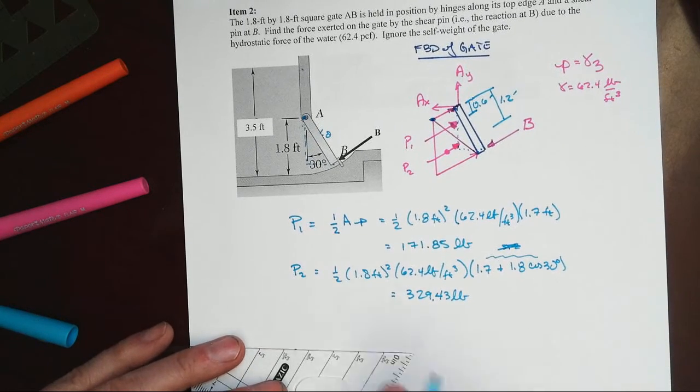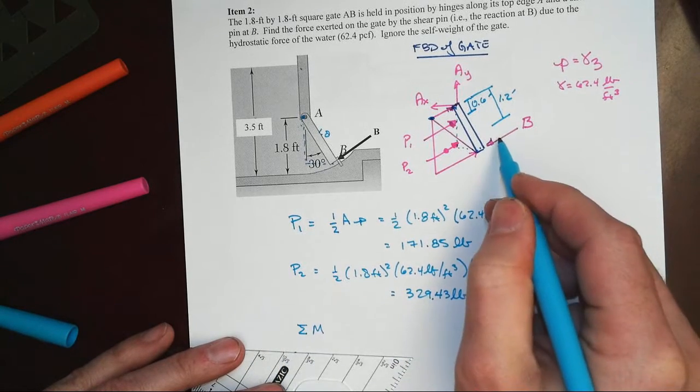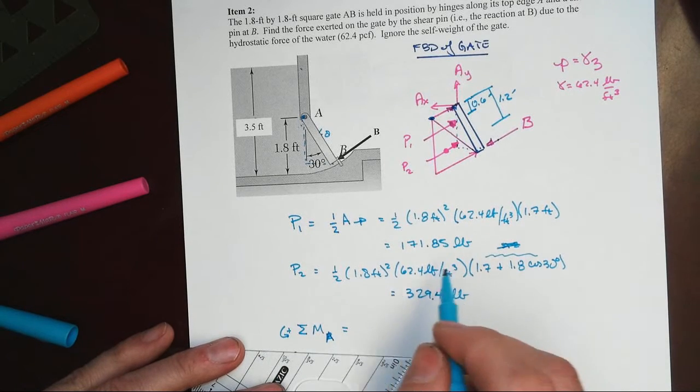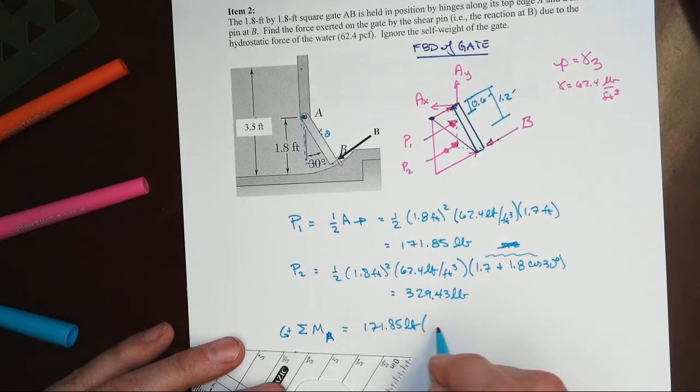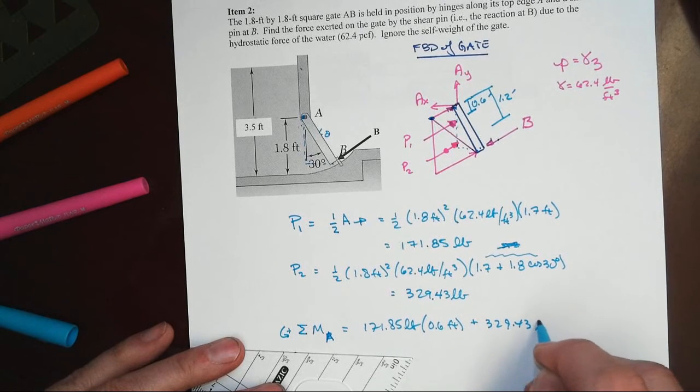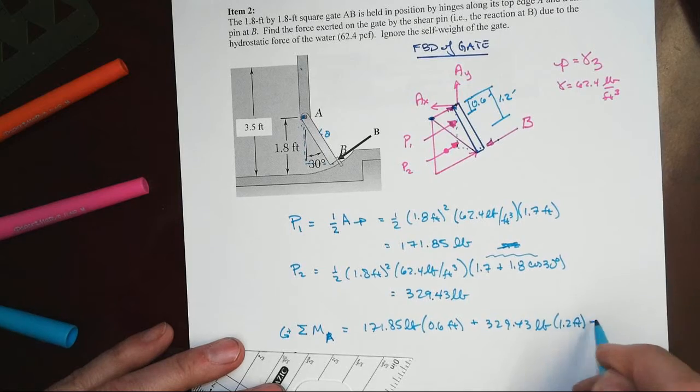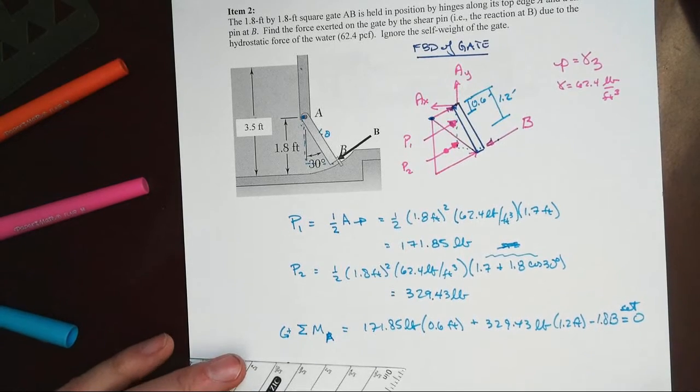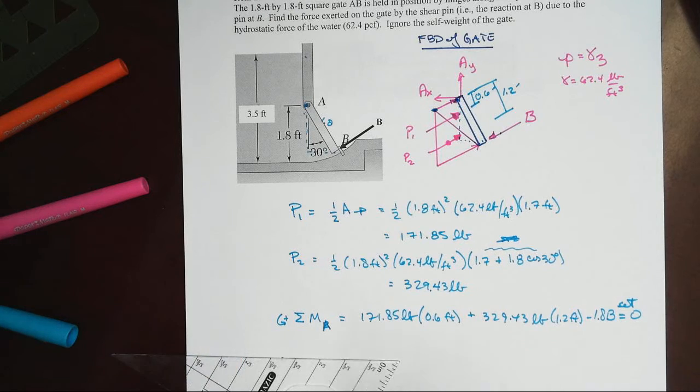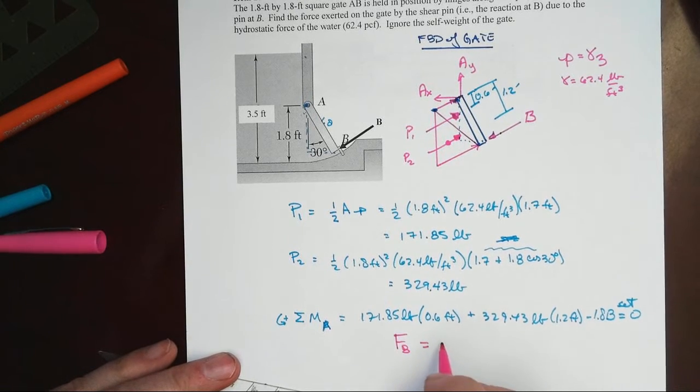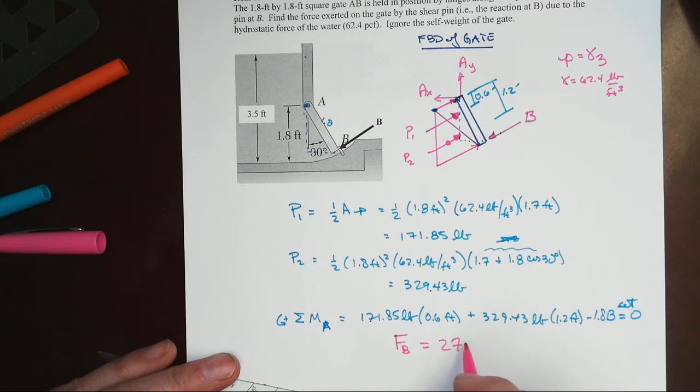So finally, to then get to what we were asked to find, which was the force at B, with some moments about point A, let's take counterclockwise positive. Then we'll have 171.85 pounds times 0.6 feet plus 329.43 pounds times 1.2 feet minus 1.8 times B, set it equal to 0, and we will find that our force that we were seeking, force at B, is going to be equal to approximately 276 or 277 pounds.